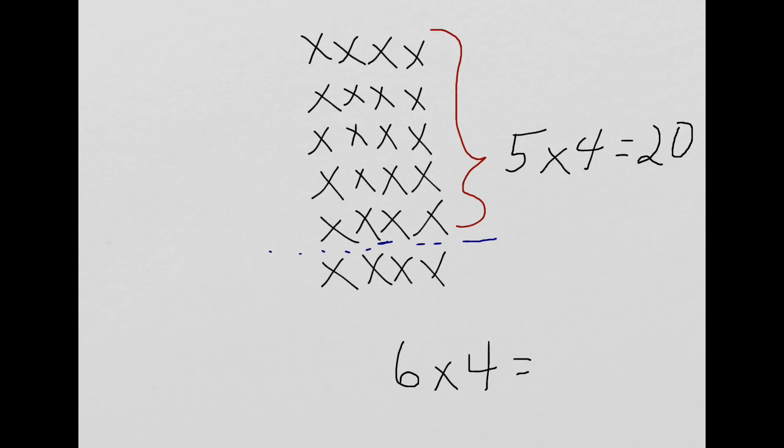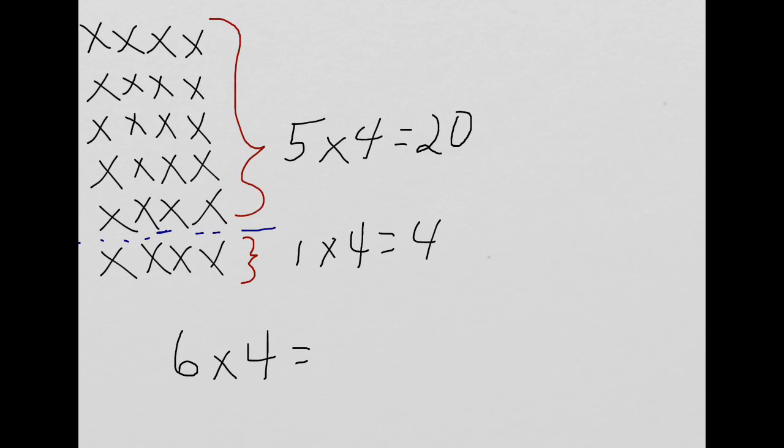And then what we have left down here is really very easy to work with. We have one group of 4. So, that's 1 times 4, and we see pretty readily that that's 4. Now, here's the cool bit, is what I can do now is I can add the two parts of the array together. So, this is where things, I think, became a little confusing while we were studying it. Is, all I'm about to do is to solve 6 times 4. I'm going to add 5 times 4 and 1 times 4 back together.